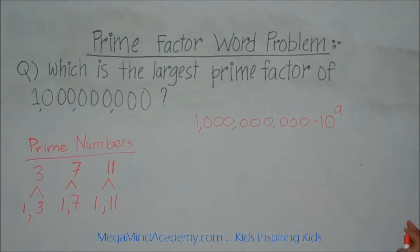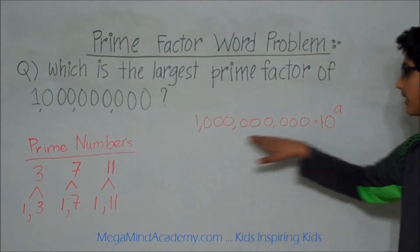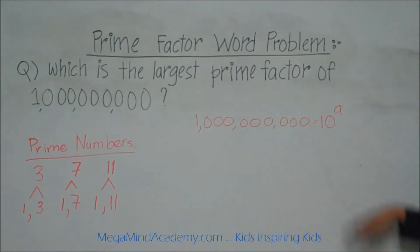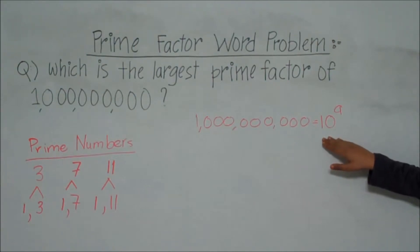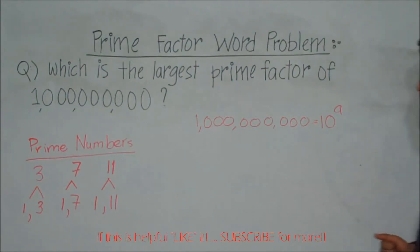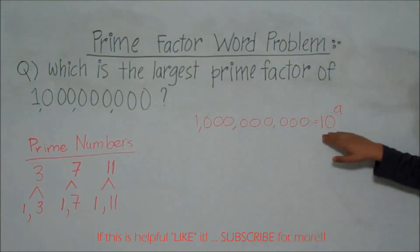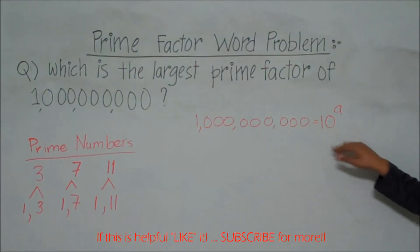We know that any factor of 1 billion that is greater than 10 is a multiple of 10. So that means that it has an extra factor, which is 10, making it not a prime number. That means that the largest prime factor of 1 billion is less than 10 and is also a factor of 10.